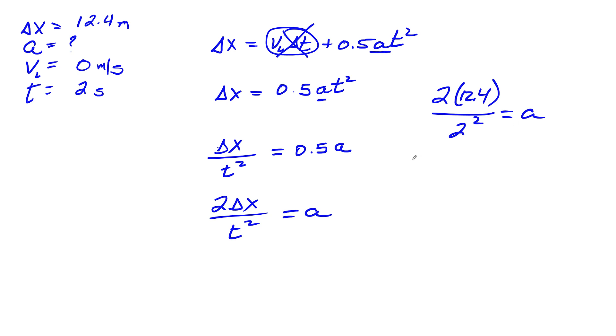So, 12.4 times 2 gives me 24.8 divided by 2 squared, which is 4. And I'm going to have 6.2 meters per second squared. And that will give me my acceleration.